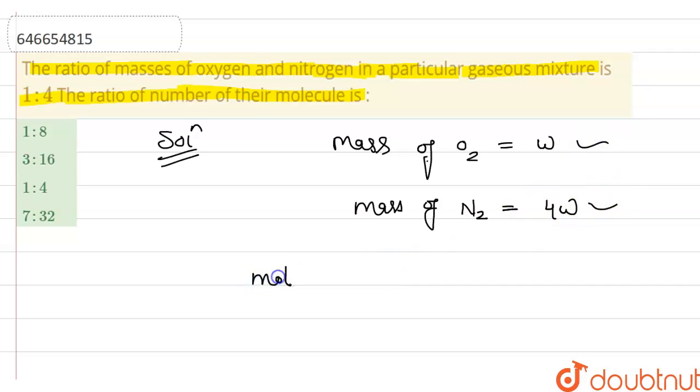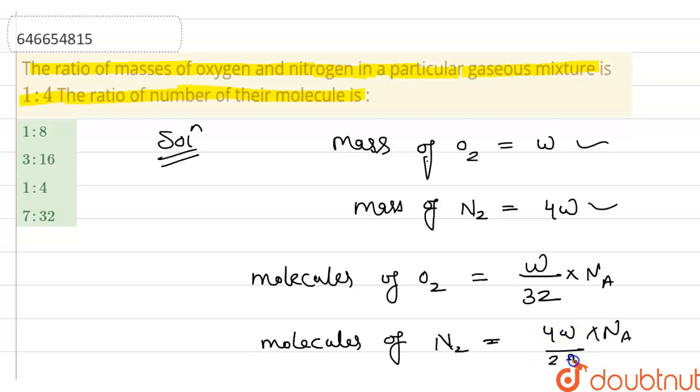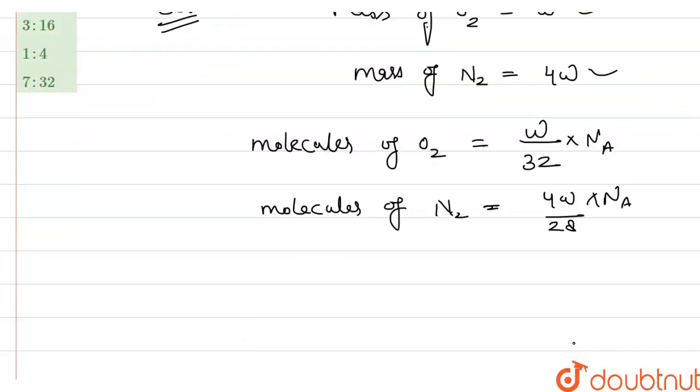So molecules of O2, molecules of O2, mass w upon molar mass 32 into Avogadro number. And molecules of N2 is mass upon molar mass 28 into Avogadro number.